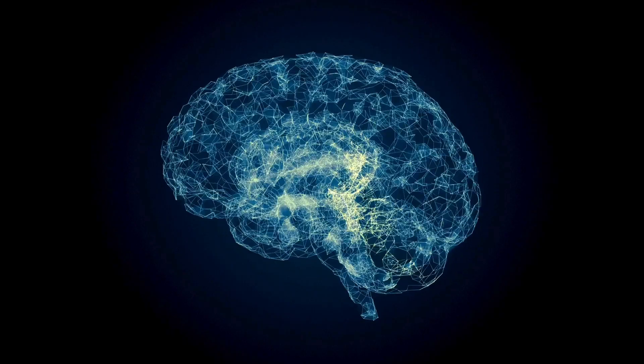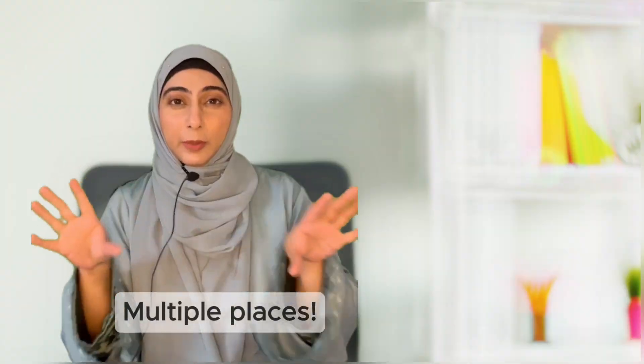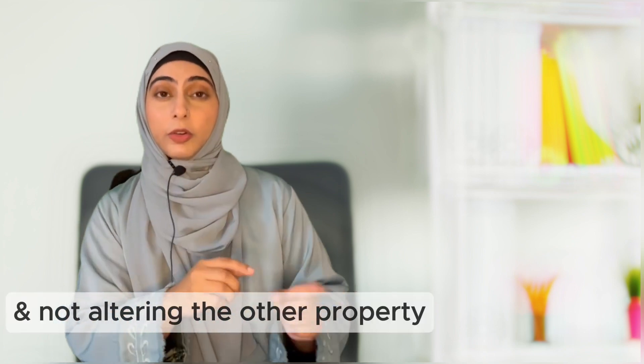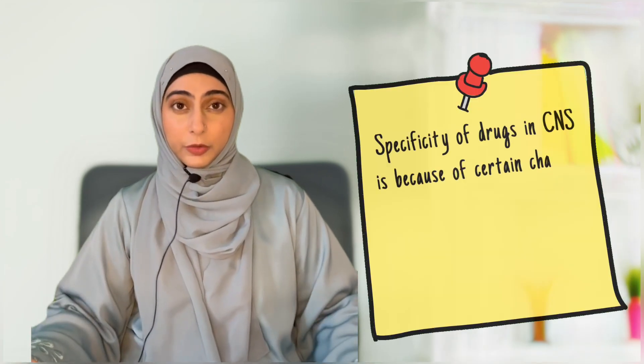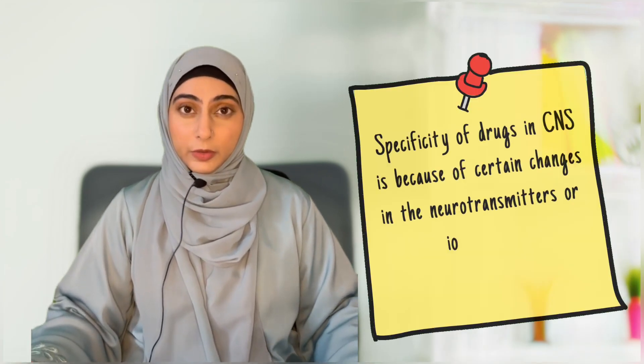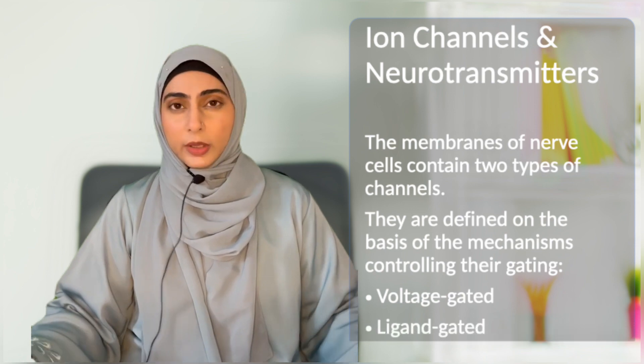The CNS is a huge platform — we have many drugs and many neurotransmitters released in multiple places, producing different effects. When our drugs are targeted towards one behavior, how are they specific to that behavior and not altering other properties? This specificity comes because of certain changes in the neurotransmitters or ion channels in the brain.